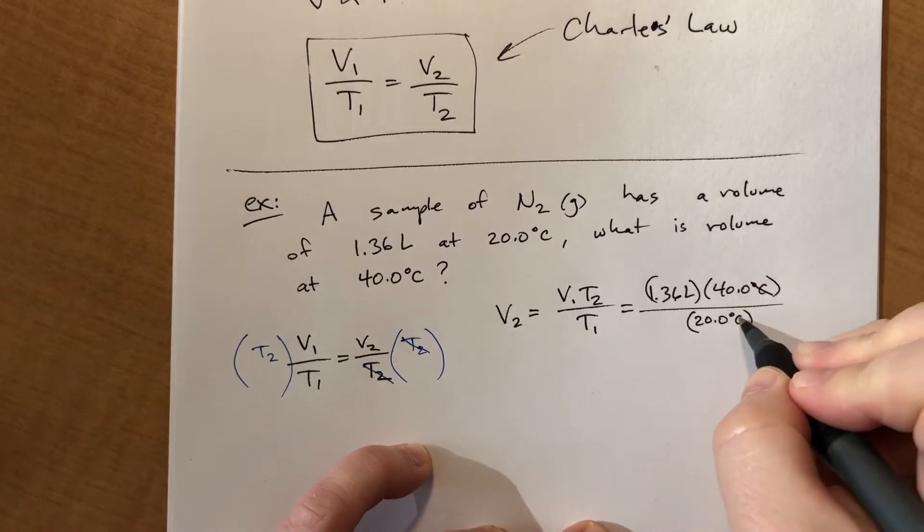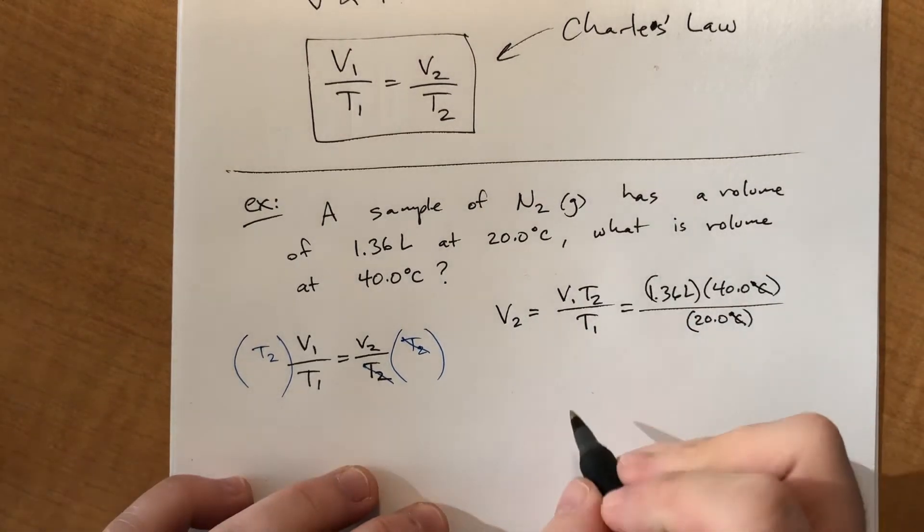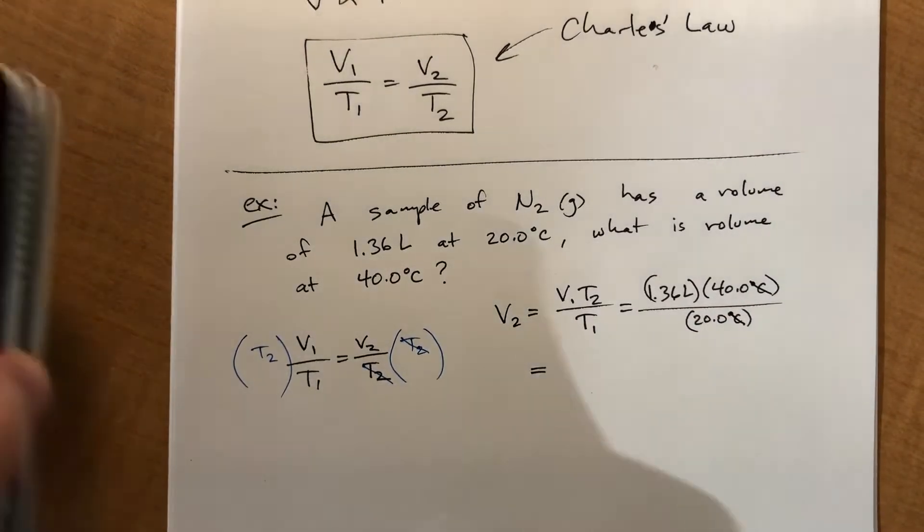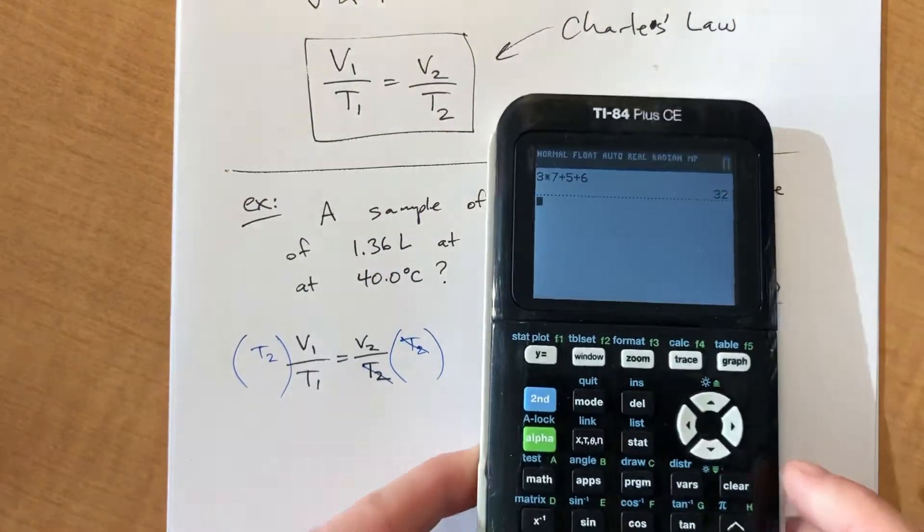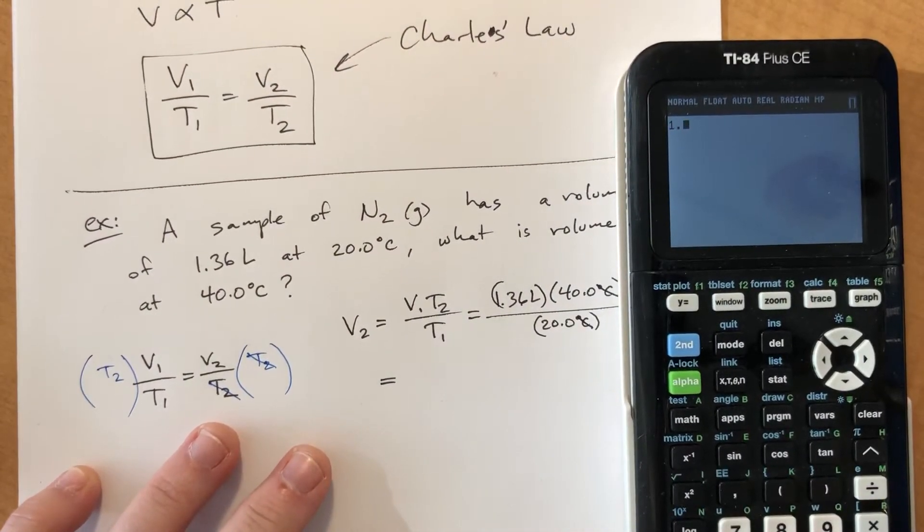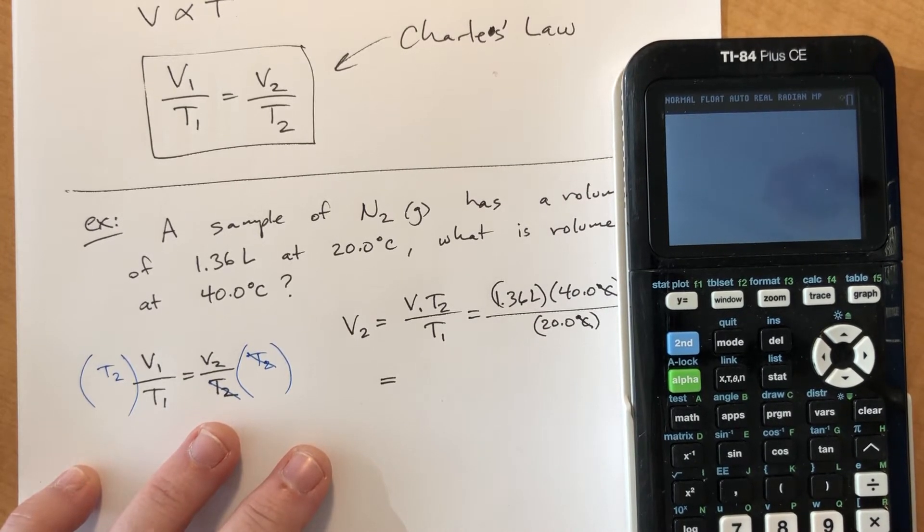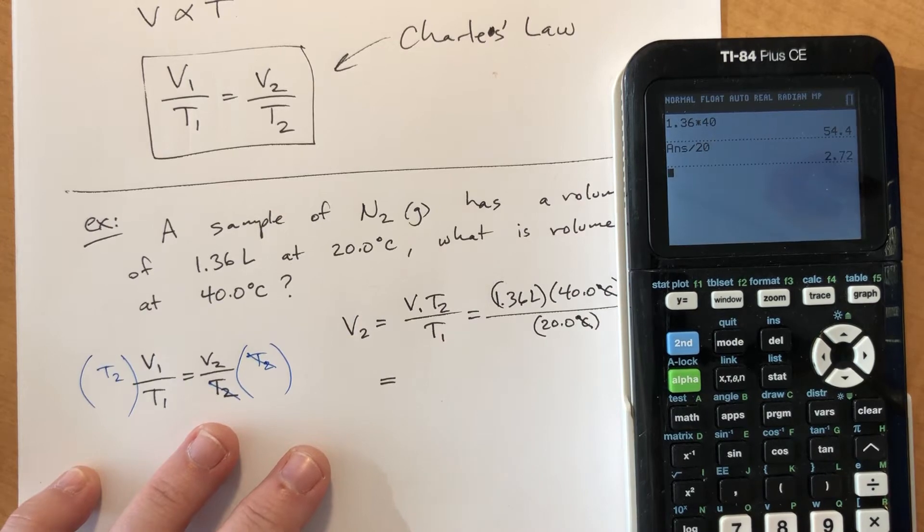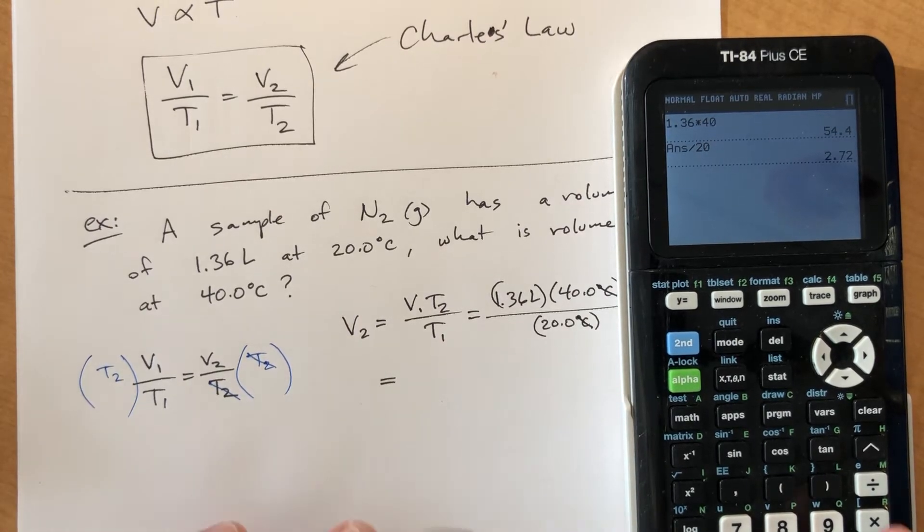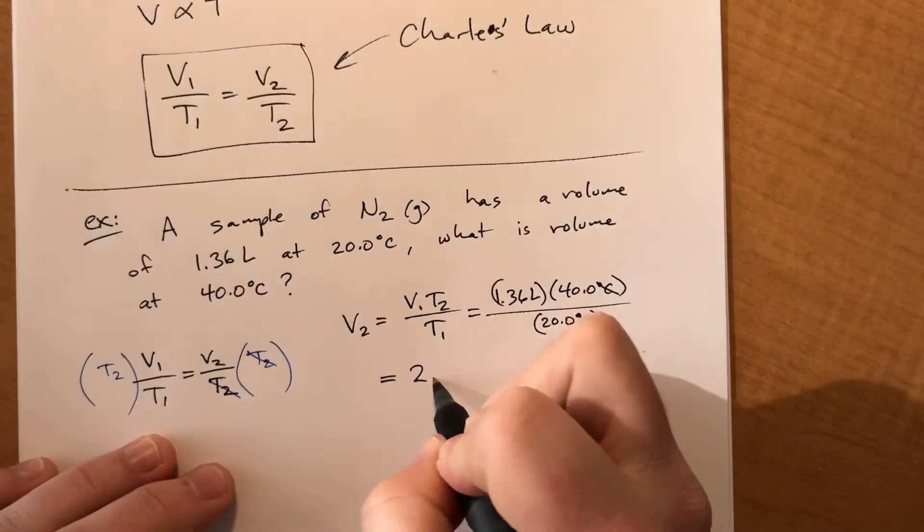Well, those cancel out this degree Celsius, so we end up with liters, which makes sense, which is encouraging. We set up our equation correctly. And if you plug this in, 1.36 times 40 divided by 20. And I got 2.72. Okay. Yay.